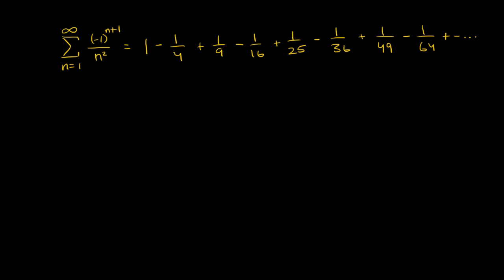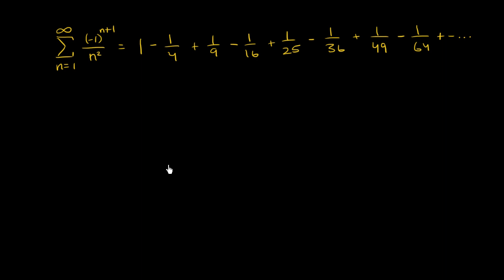We know from previous tests — the alternating series test — this satisfies those constraints, and we're able to show that it converges. What we're doing now is actually trying to estimate what things converge to. We want to estimate what this value s is, and we're going to do that by doing a finite number of calculations, without having to add the entire thing together.